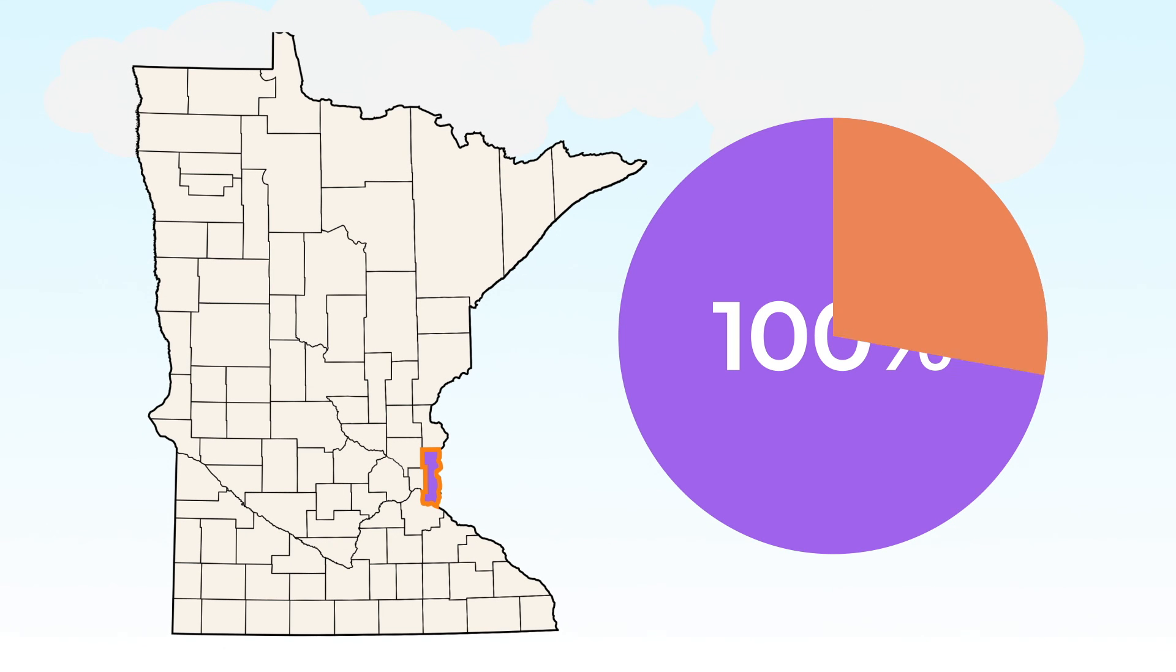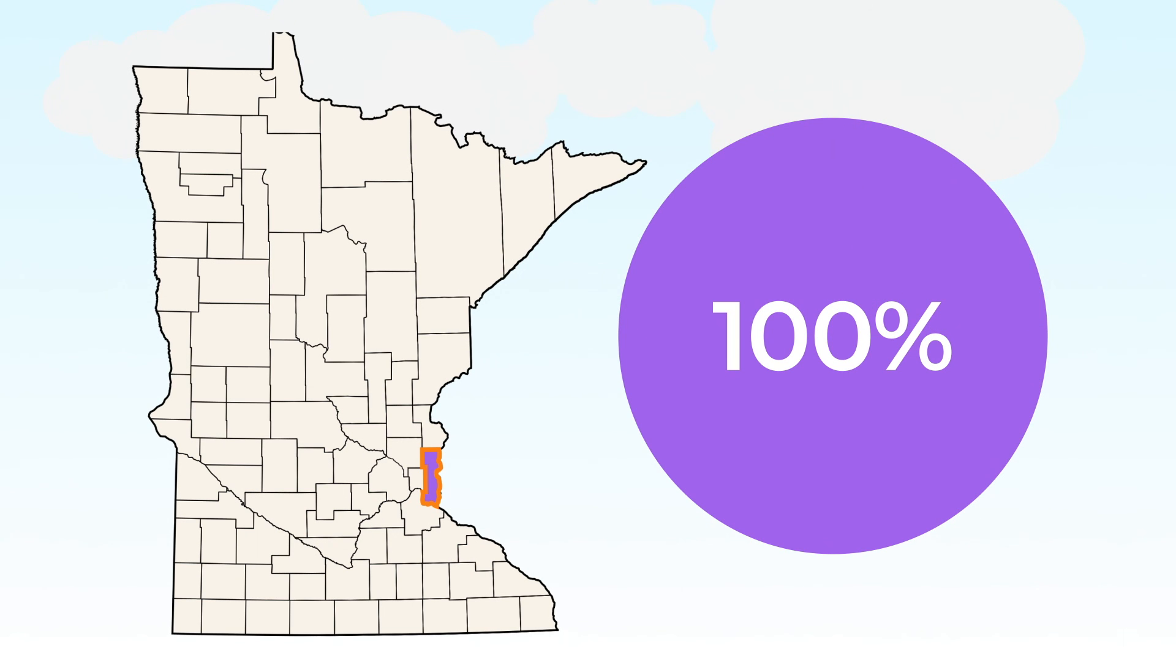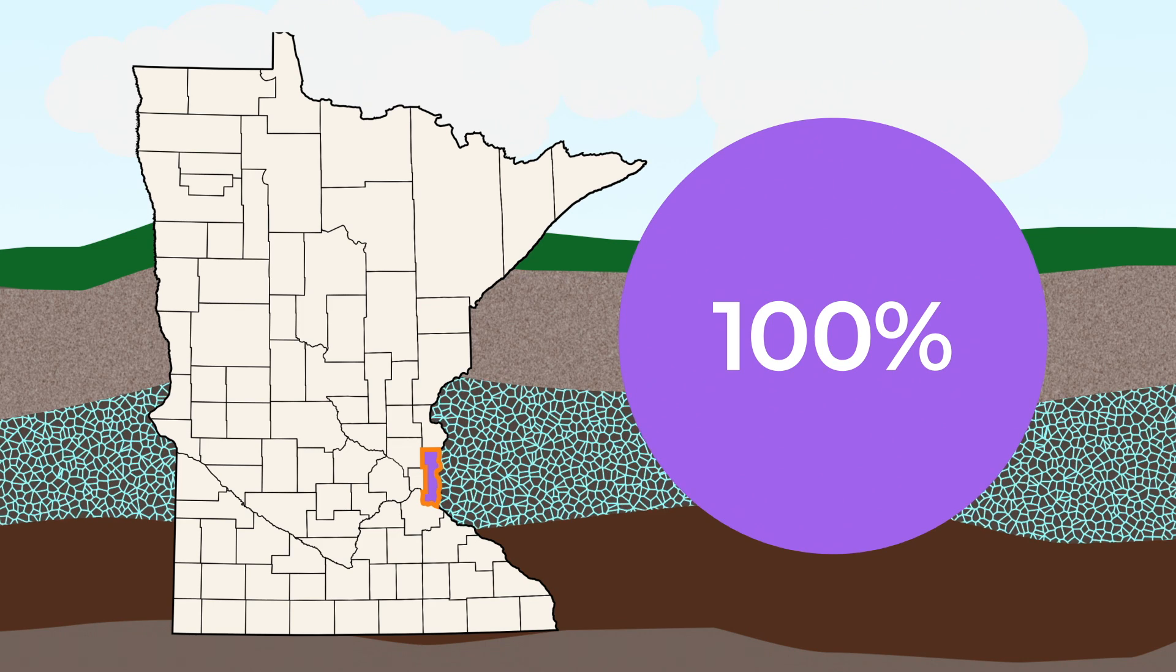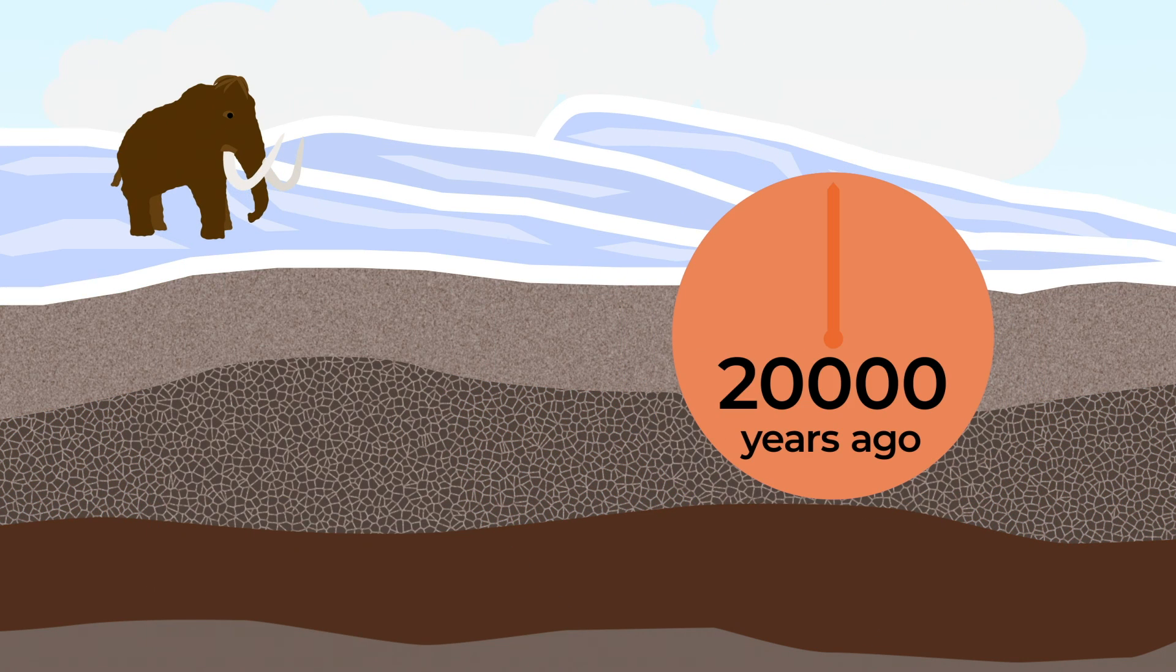Here in Washington County, 100% of our drinking water comes from groundwater. The water comes from glaciers that melted thousands of years ago.